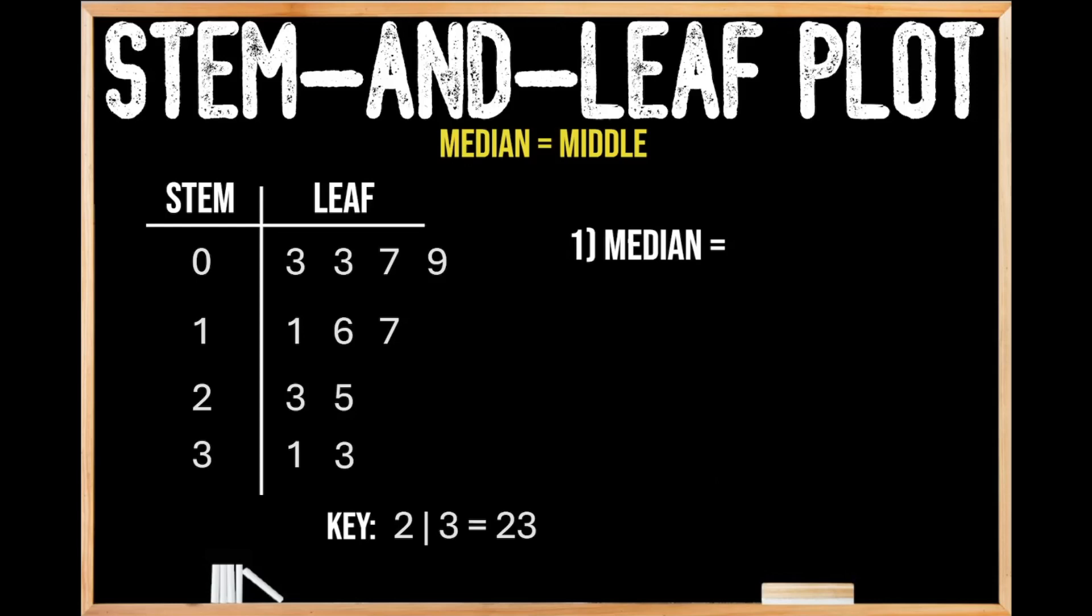So we need to figure out how many individual values we have in our stem-and-leaf plot so that we can figure out our middle value. So let's go ahead and count them out. So we have 1, 2, 3, 4, 5, 6, 7, 8, 9, 10, and 11.